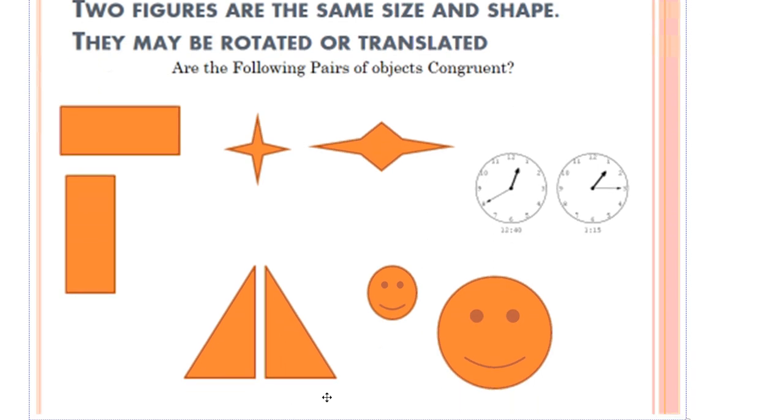What about these triangles? Yep, they're flipped. They're the exact same triangle, same shape, same size. So they are congruent.